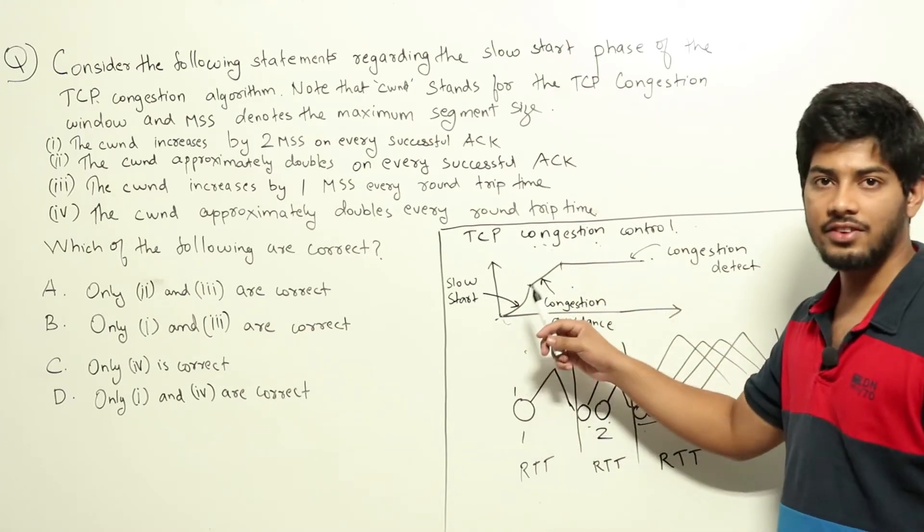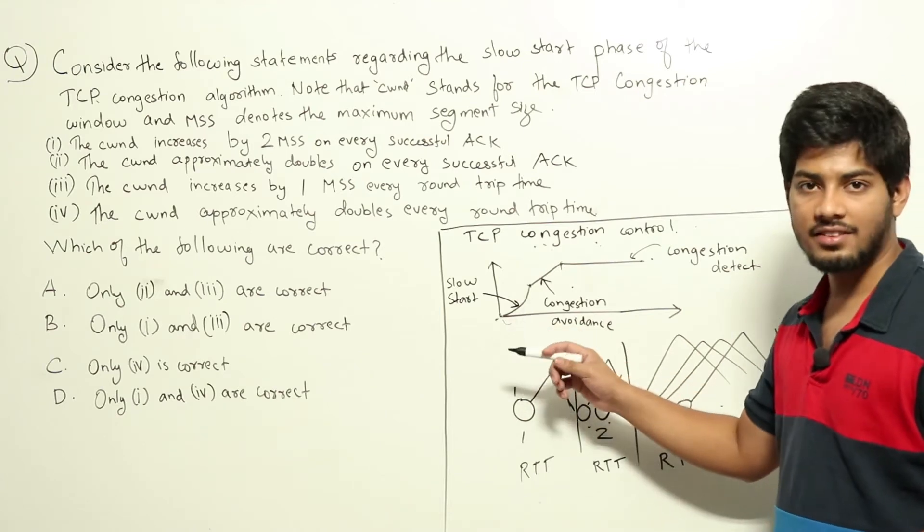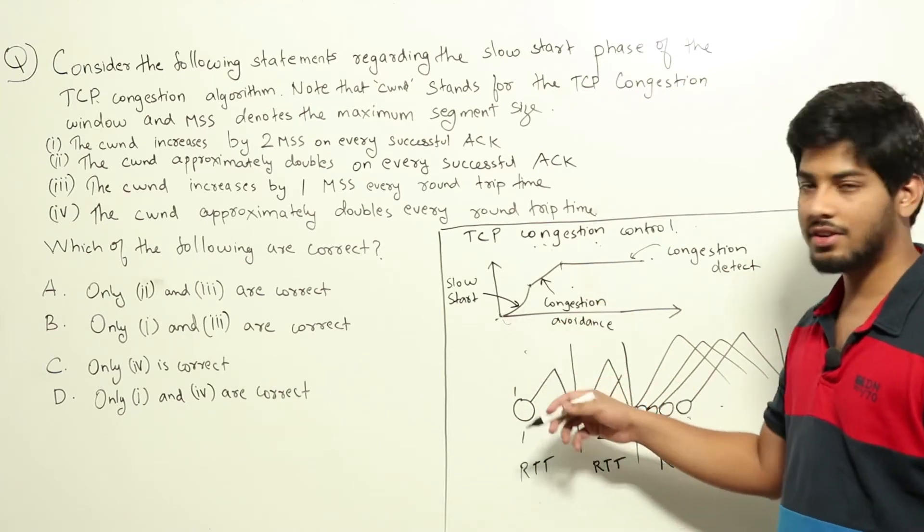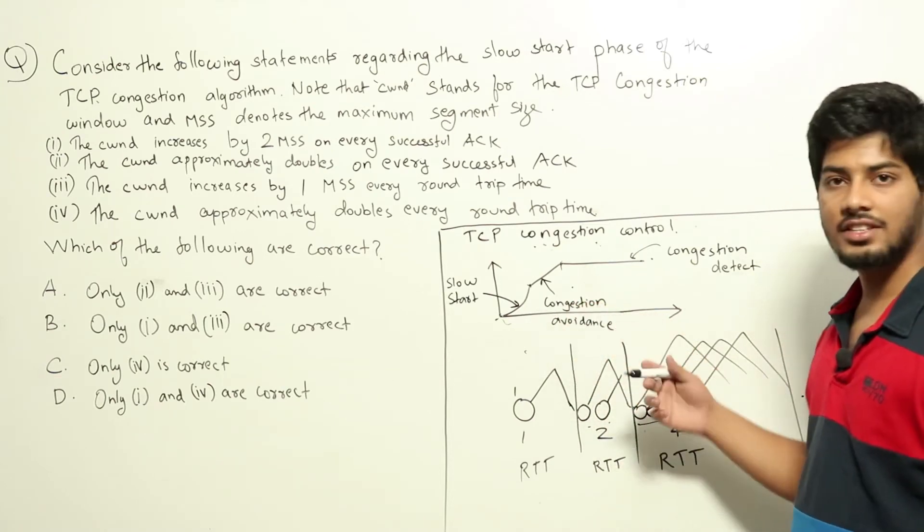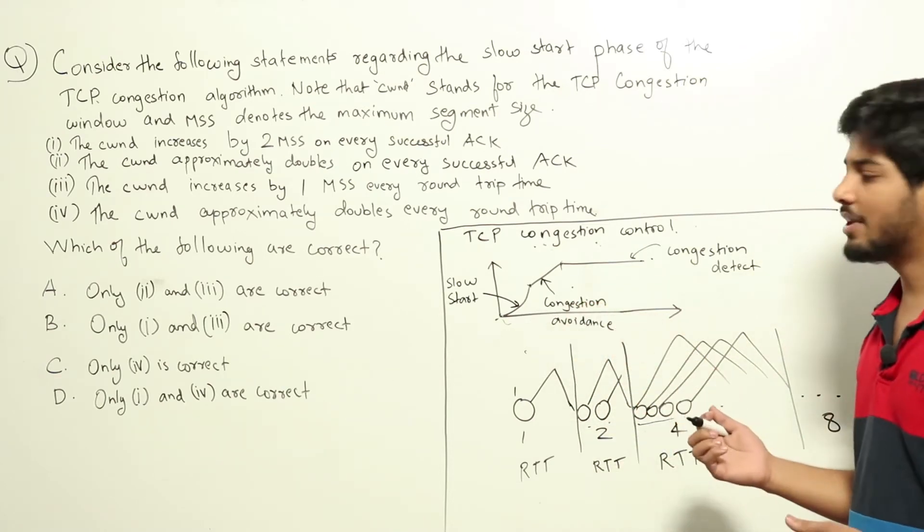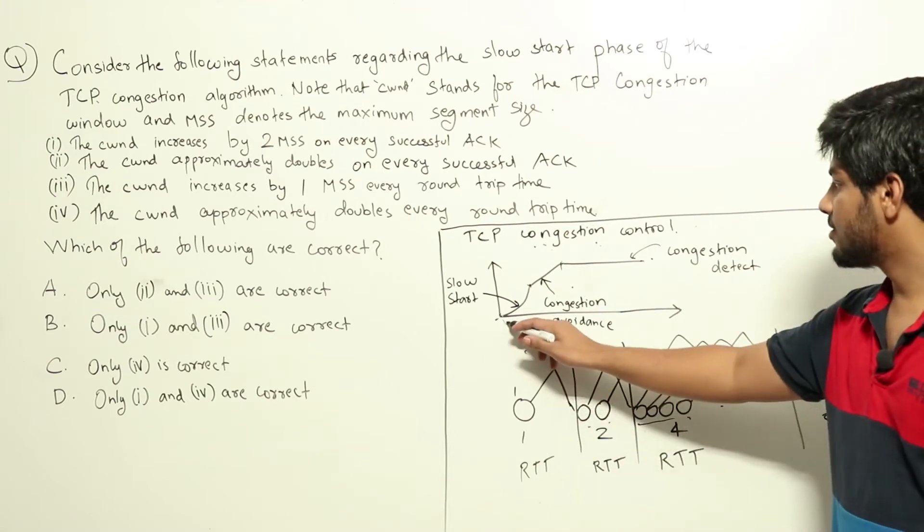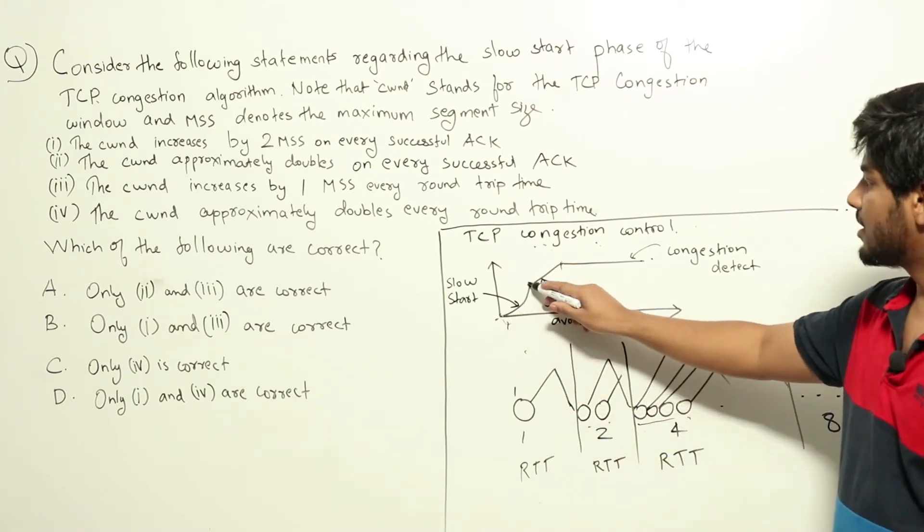So what happens in slow start phase is we will be sending one packet. After we receive the ACK, that is one round trip time, we will be sending double of that. Similarly, after each ACK we will be doubling it again. So we will be having exponential growth in this phase.